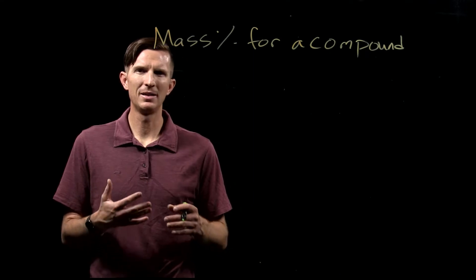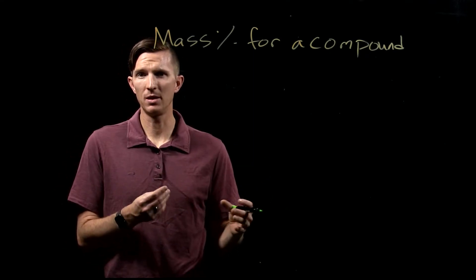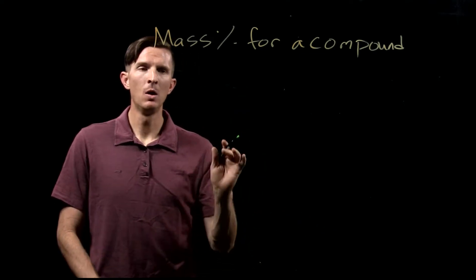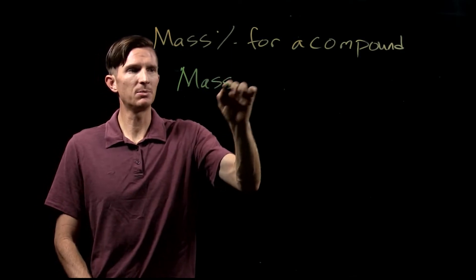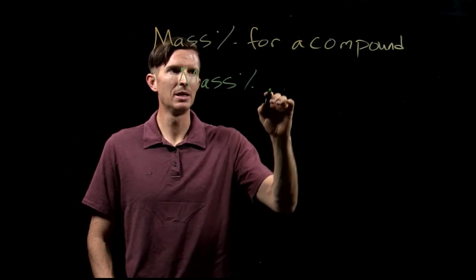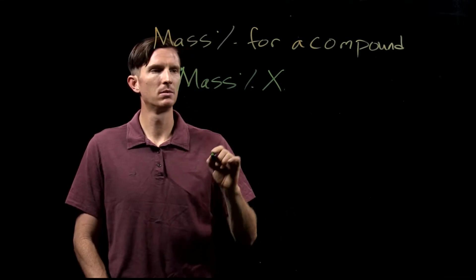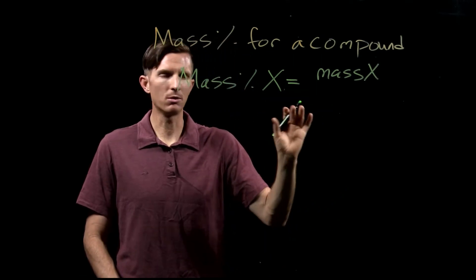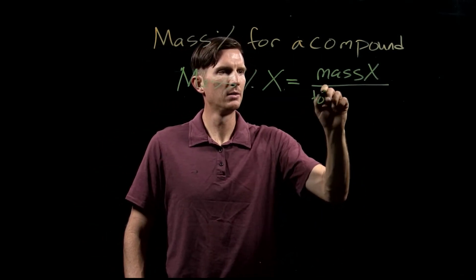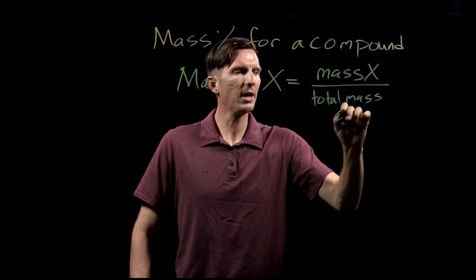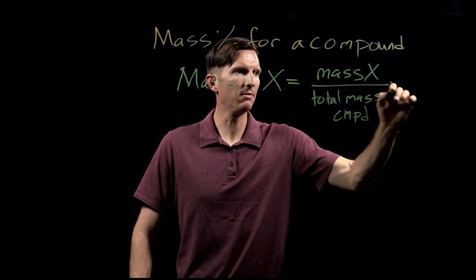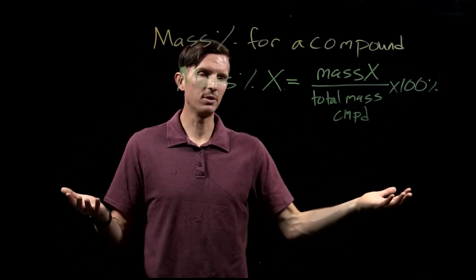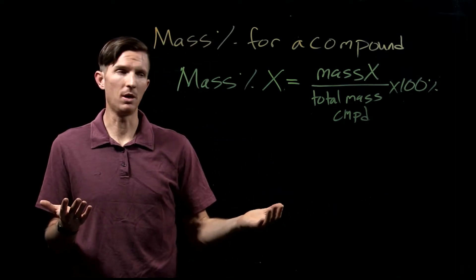In this video we want to look at identifying the mass percent of an element within an overall compound. When we talk about mass percent, the mass percent of X is going to be equal to the total mass of X divided by the total mass of our compound, times 100 percent. If we have a bunch of different elements within a compound, all of their mass percents should add up to equal 100 percent.